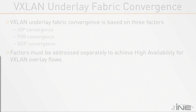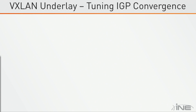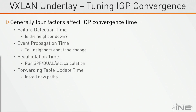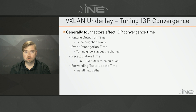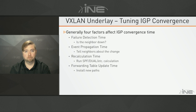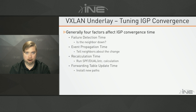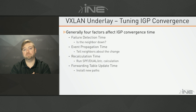For IGP, there are four different factors that we need to think about that are overall going to affect the IGP convergence time. First and foremost, it's how long does it take us to figure out that there was a failure. Failure detection time could be like the OSPF dead interval or the BGP keepalive timer — some sort of periodic polling that we're checking to see whether the remote neighbor is up or down. Assuming we figure out that the neighbor is down, the next step is that we need to react to that failure and tell everybody else in the network that this link or node went down. This is going to be our event propagation time.